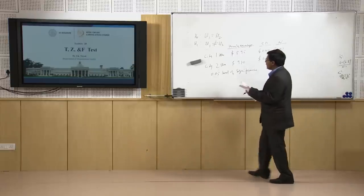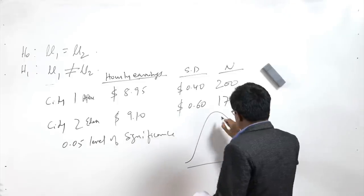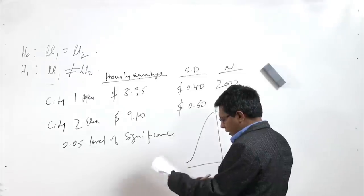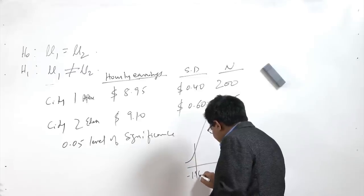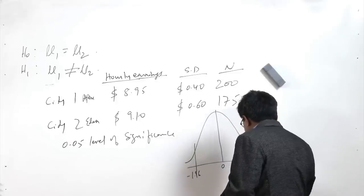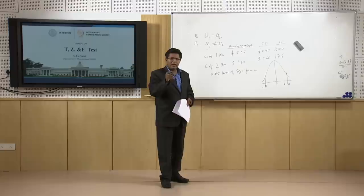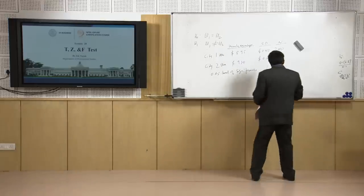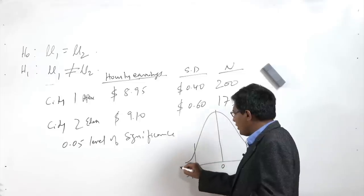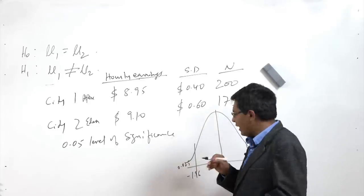Since we are at a 0.05 level of significance, drawing the normal distribution, at the 95% level the critical values are –1.96 and +1.96. We need to calculate the Z value. Is this a Z or T test? It is Z, because the sample size is much bigger than 30 — it is over 100. We are using a two-tailed test, so 0.025 remains in each tail.